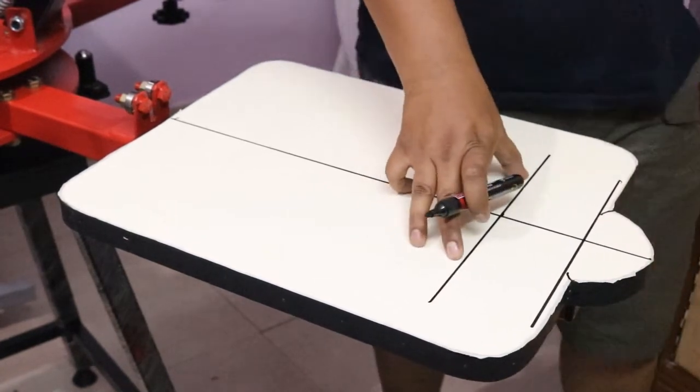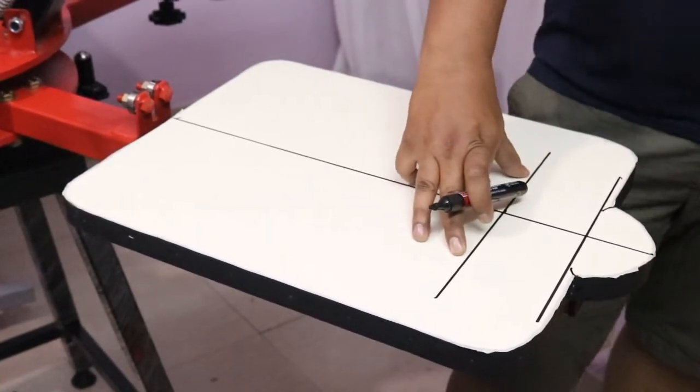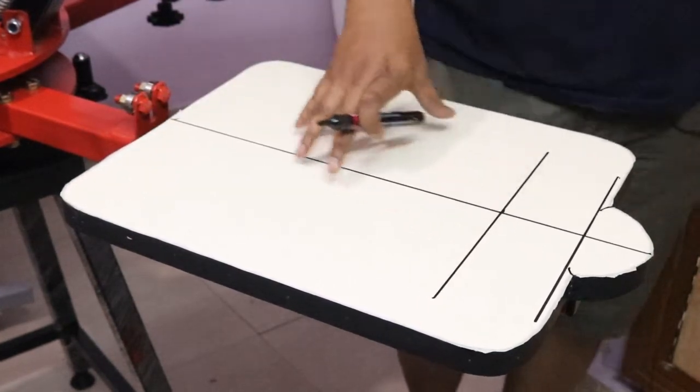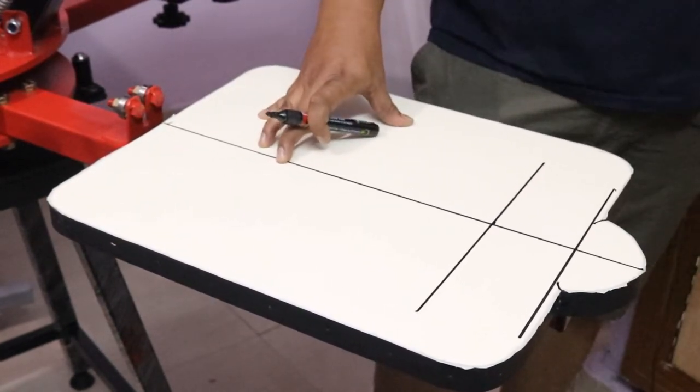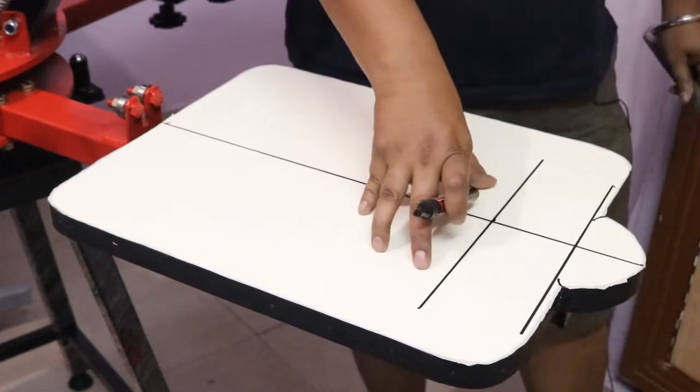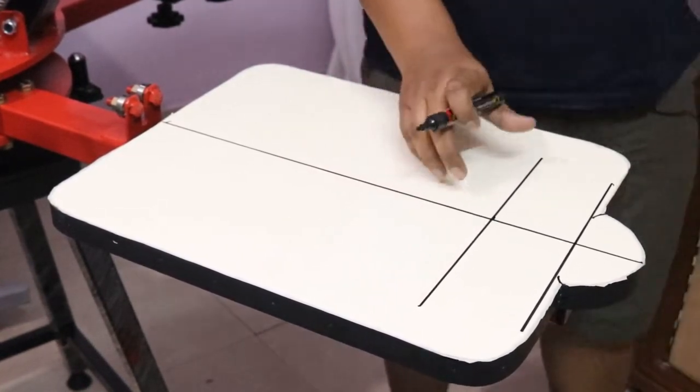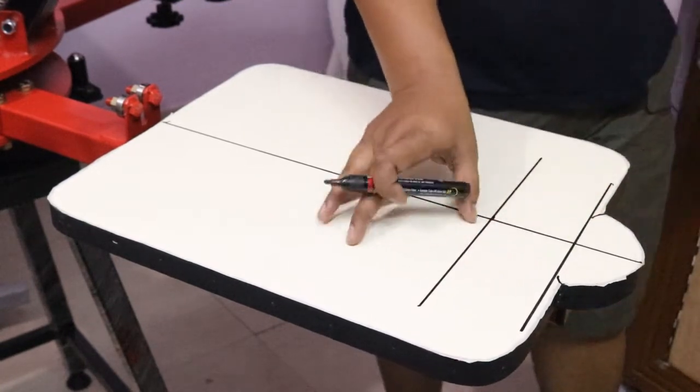This is called the chest line. When you are doing a full print, an A4 print, or A3 print, this is how your t-shirt print should start. So your neck should be here, your print will start from here.